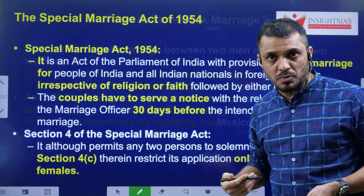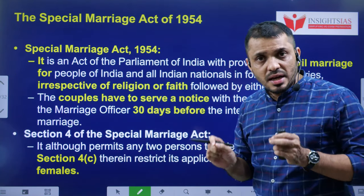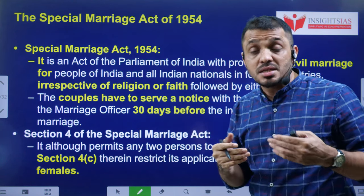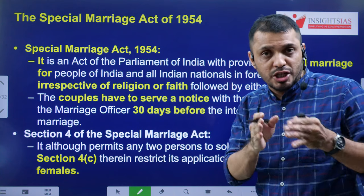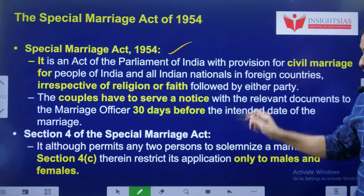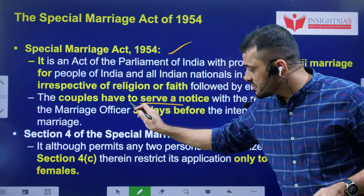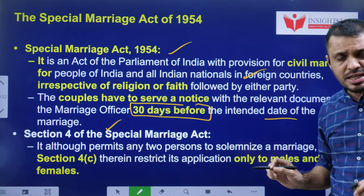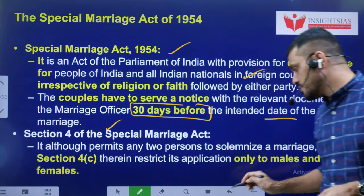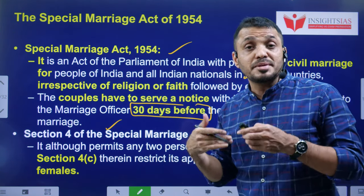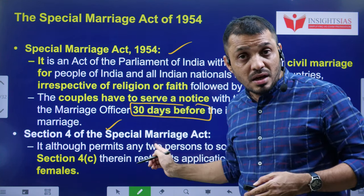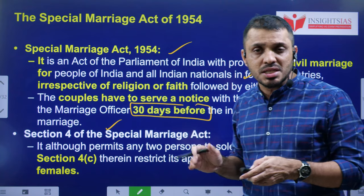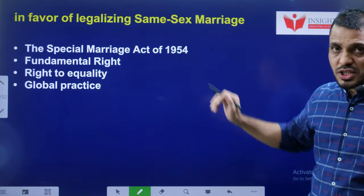The first country which recognized same-sex marriage was the Netherlands. Regarding the Special Marriage Act in India — the Special Marriage Act 1954 provides that interfaith couples, or couples who want to marry without traditional customs, can use this act. One condition is that they have to give 30 days' notice before the date of marriage. Section 4 of the Special Marriage Act clearly mentions that the marriage should only be between a male and a female. LGBTQ activists argue this provision is against their rights and the law must be struck down, but the Supreme Court did not agree.